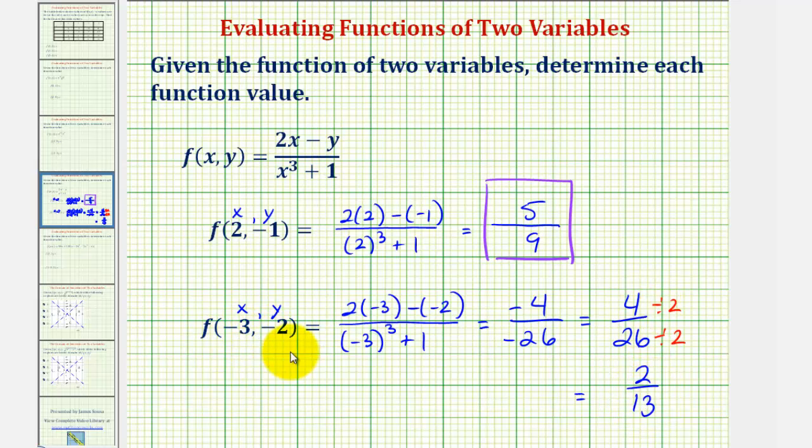So f of negative three comma negative two is equal to two-thirteenths. I hope you found this helpful.